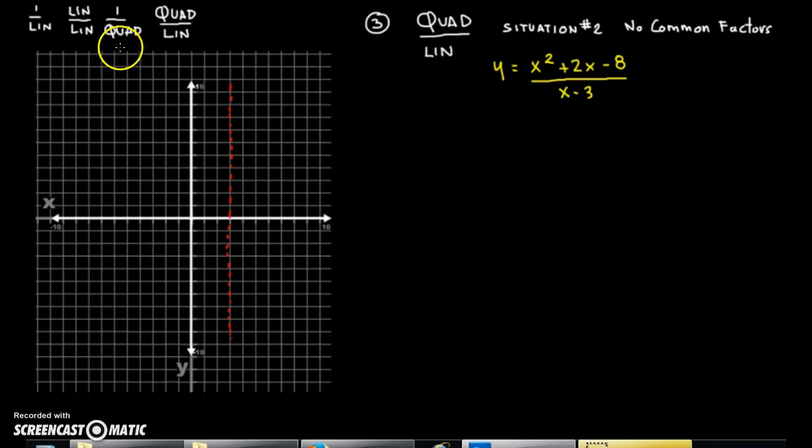So far we've got, what do we got so far? We've got 1 over linear, a linear over linear, which ends up giving us our standard type of rational expression graph. And then we have the 1 over the quadratic, which gave us this slightly strange looking one. It's very tight to the asymptotes and it's on both sides of the horizontal asymptote. And then we have a quadratic over linear and we're halfway through that.